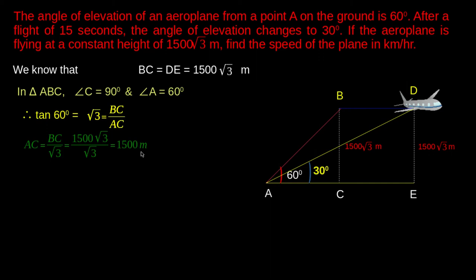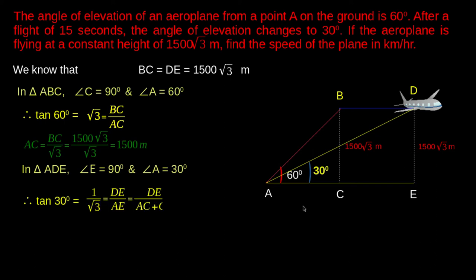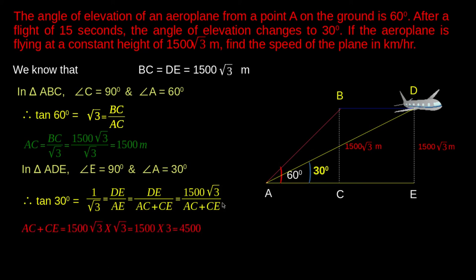To find AE, consider triangle ADE. In triangle ADE, tan 30° = DE/AE. We know that tan 30° = 1/root 3. So 1/root 3 = 1500 root 3 divided by AE, where AE = AC + CE. Therefore, AE = 1500 root 3 × root 3, which equals 4500 meters.